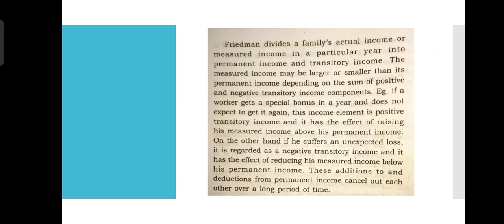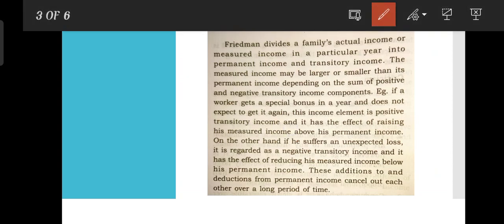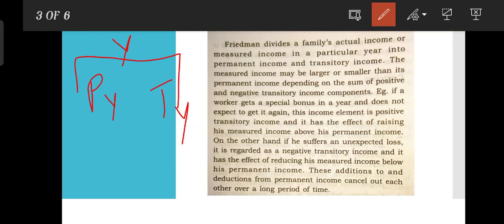Friedman divides a family's actual income, or measured income, in a particular year into permanent income and transitory income. The measured income may be larger or smaller than the permanent income depending on the sum of positive and negative transitory income components.